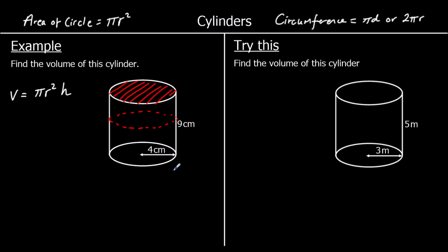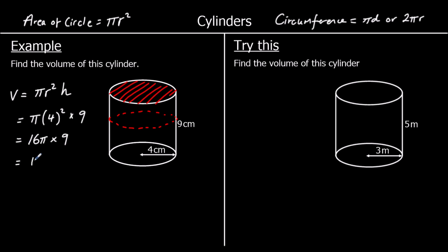In this example, we've got a radius of 4 and a height of 9. So the volume is going to be pi times 4 squared times 9. You can type that into the calculator, or if you don't have a calculator, you can leave your answer in terms of pi. 4 squared is 16, so pi times 16, we write that as 16 pi. So we've got 16 pi times 9, and 16 times 9 is the same as 16 times 10 take away a 16. So 16 times 10 is 160, take away one 16 is 144. So we've got 144 pi centimetres cubed.